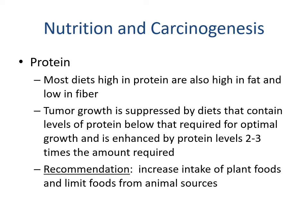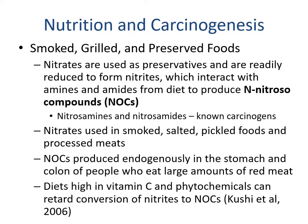Most high-protein diets are also high in fat and low in fiber — the typical American gets high protein from chicken nuggets and hamburgers rather than lean sources. Tumor growth is suppressed by diets below the protein level required for optimal growth and is enhanced by protein levels two to three times the required amount. The recommendation is to increase intake of plant foods and limit animal sources, particularly the higher-fat, less healthy choices.